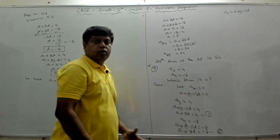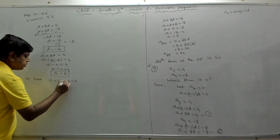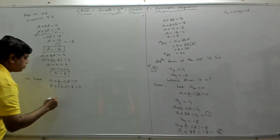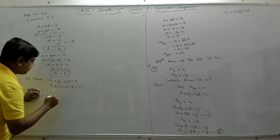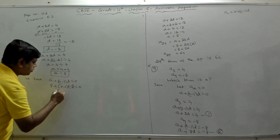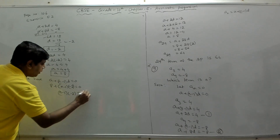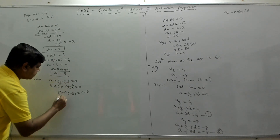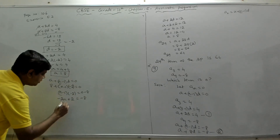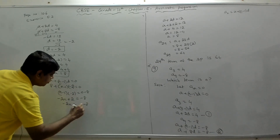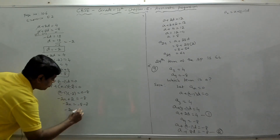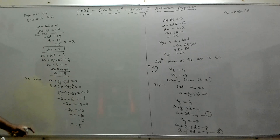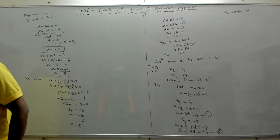Expanding: 8 − 2n + 2 = 0, so −2n = −10, giving n = 5. The fifth term of this AP is 0.